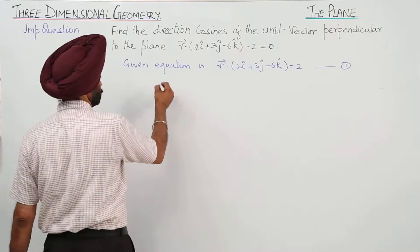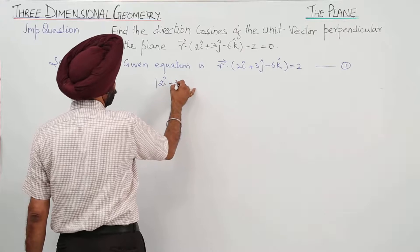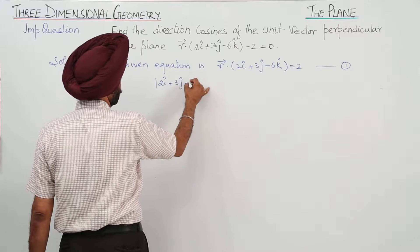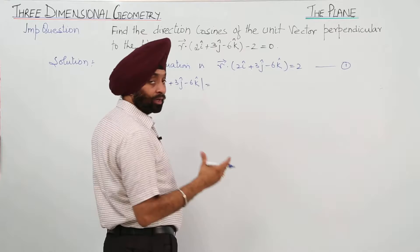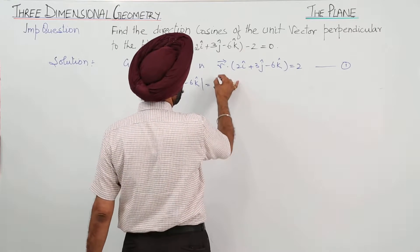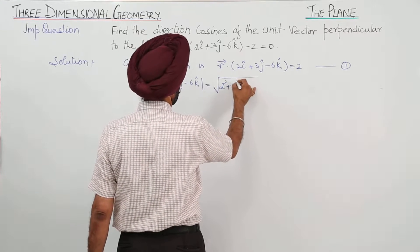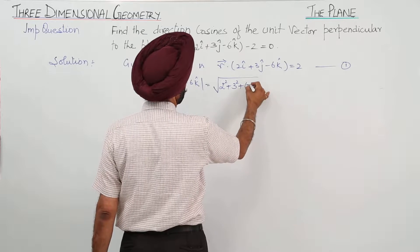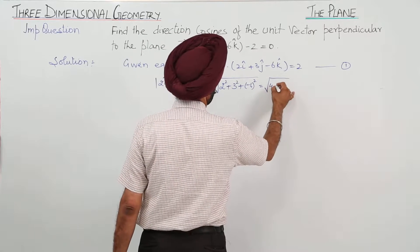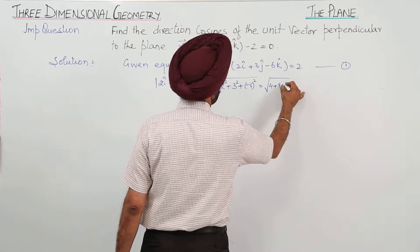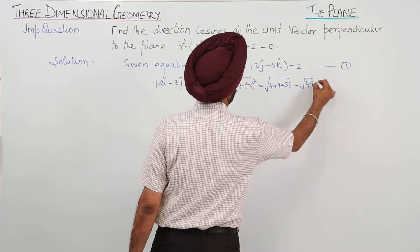Now 2i cap plus 3j cap minus 6k cap has magnitude equal to the square root of 2 squared plus 3 squared plus (minus 6) squared, which equals square root of 4 plus 9 plus 36, which equals square root of 49, which is 7.